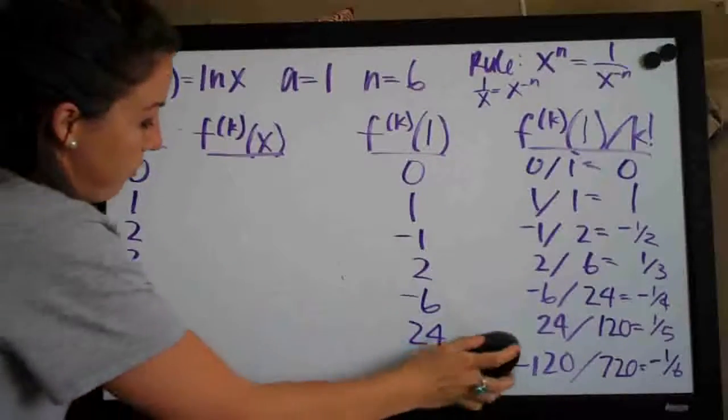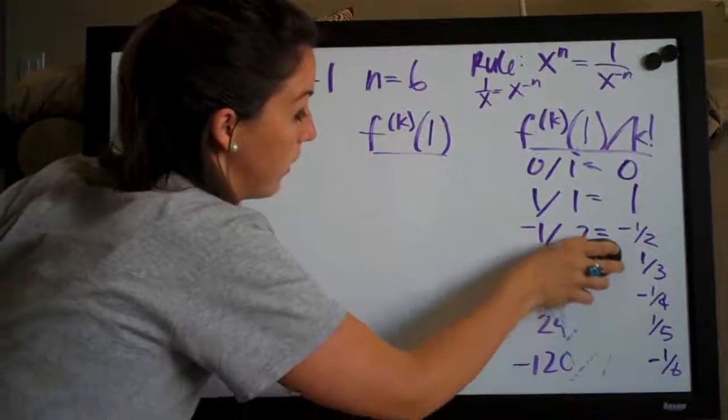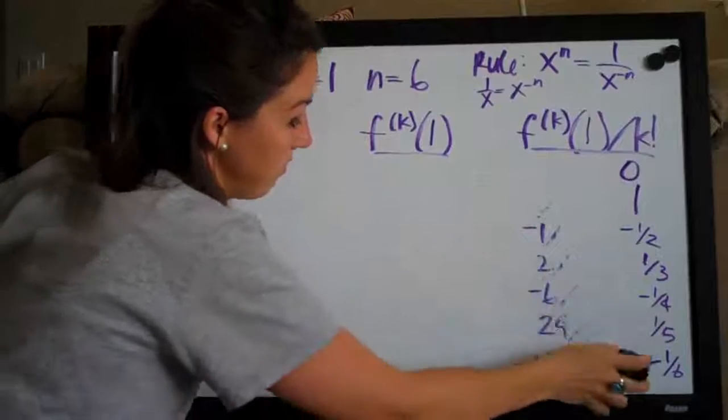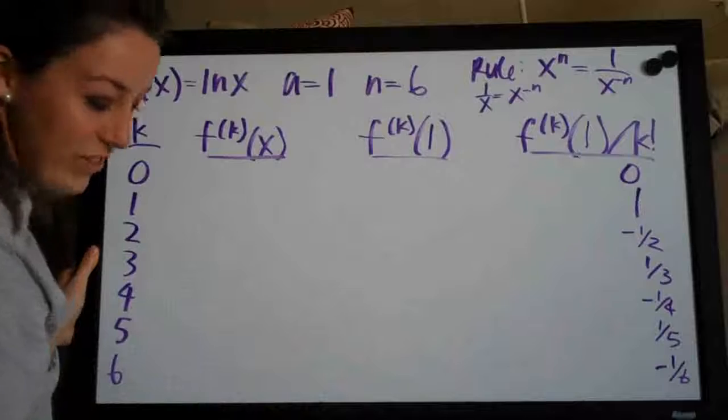We want to leave k because we'll need that to construct our Taylor polynomial. But we can get rid of all of this. Seems like a lot of work for just those stupid little coefficients.